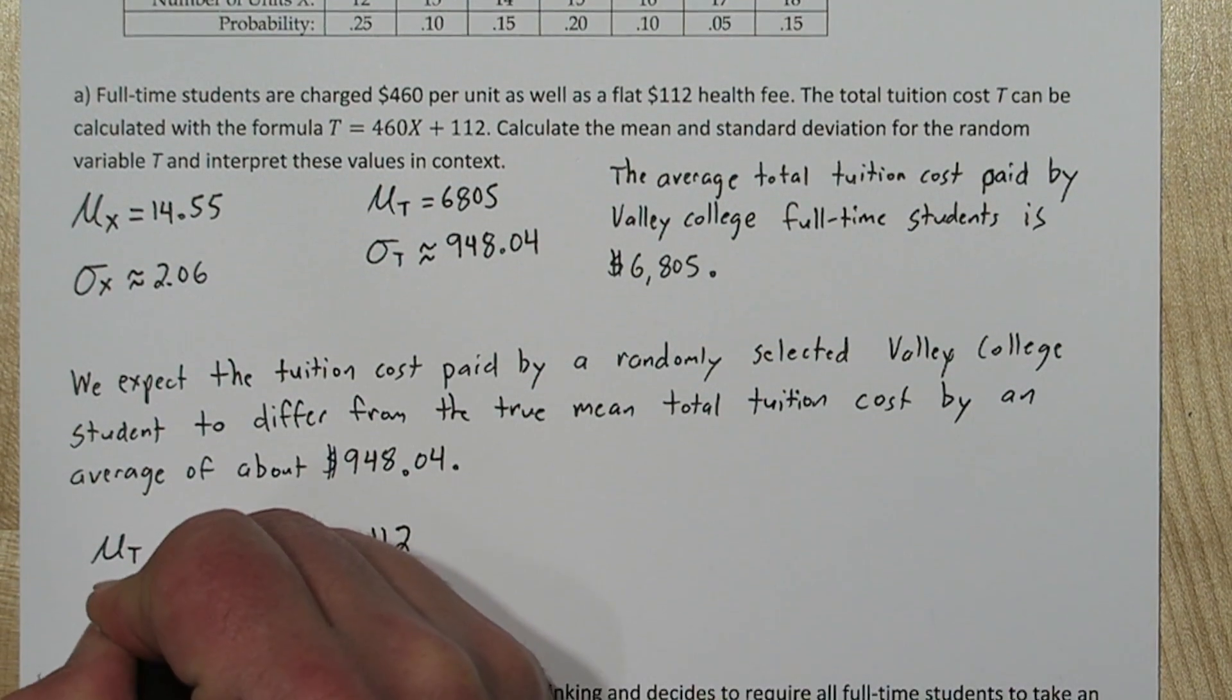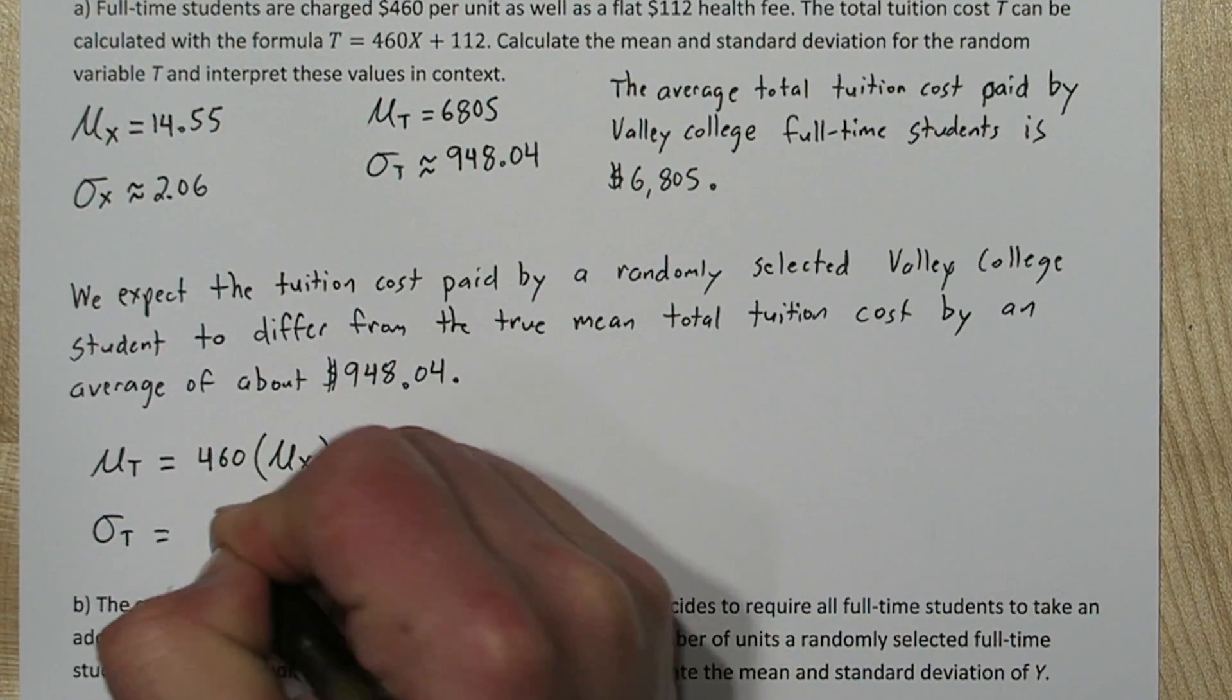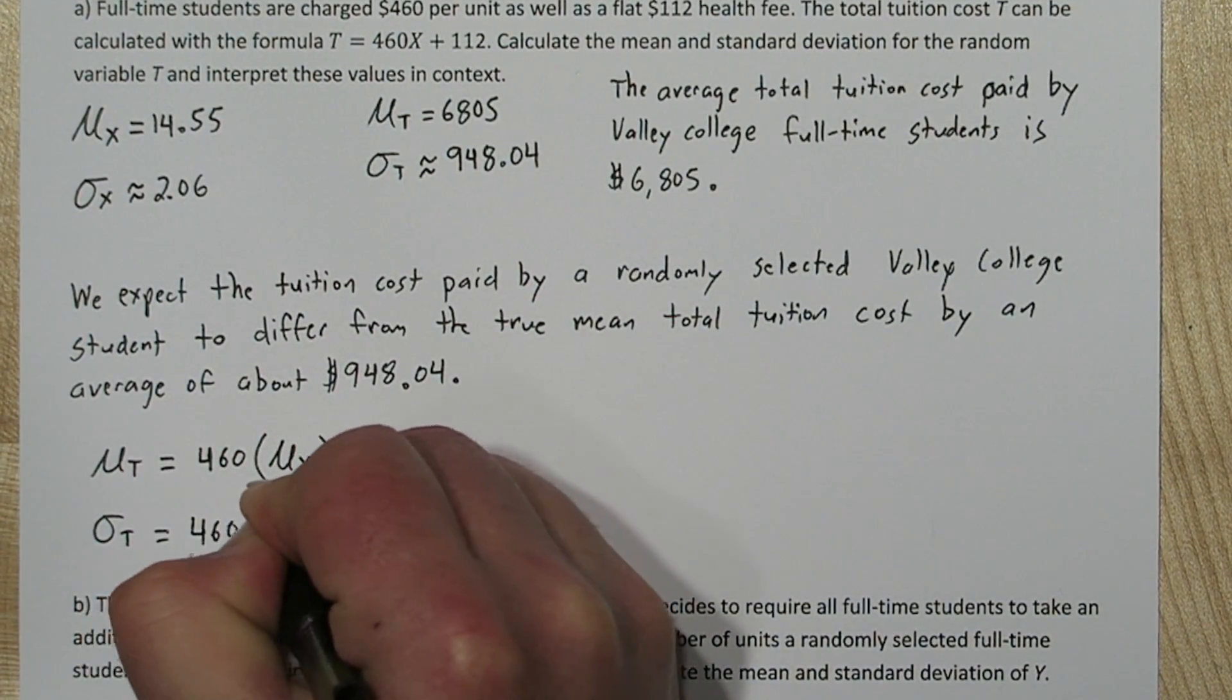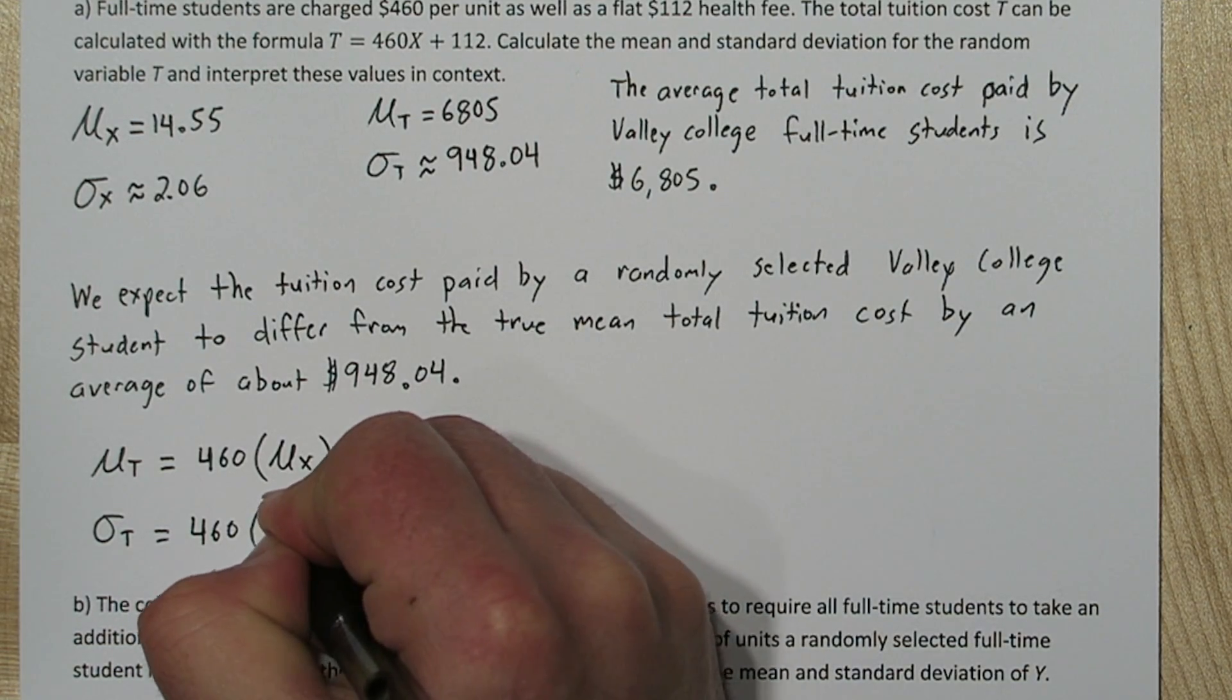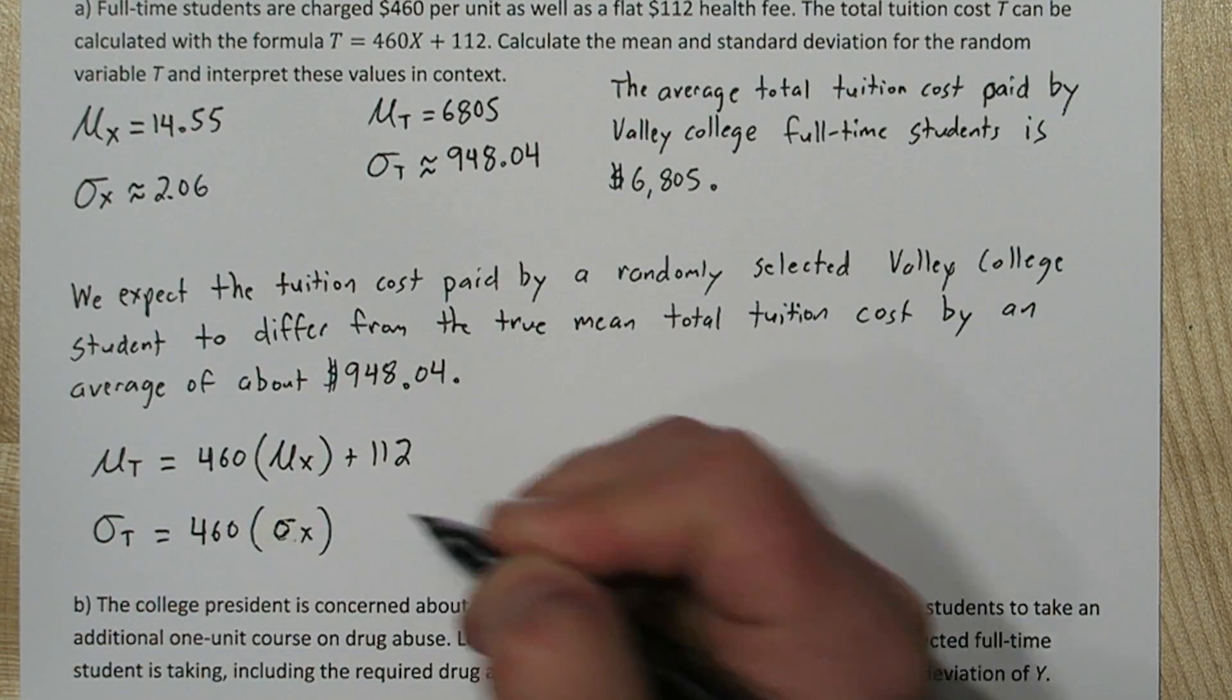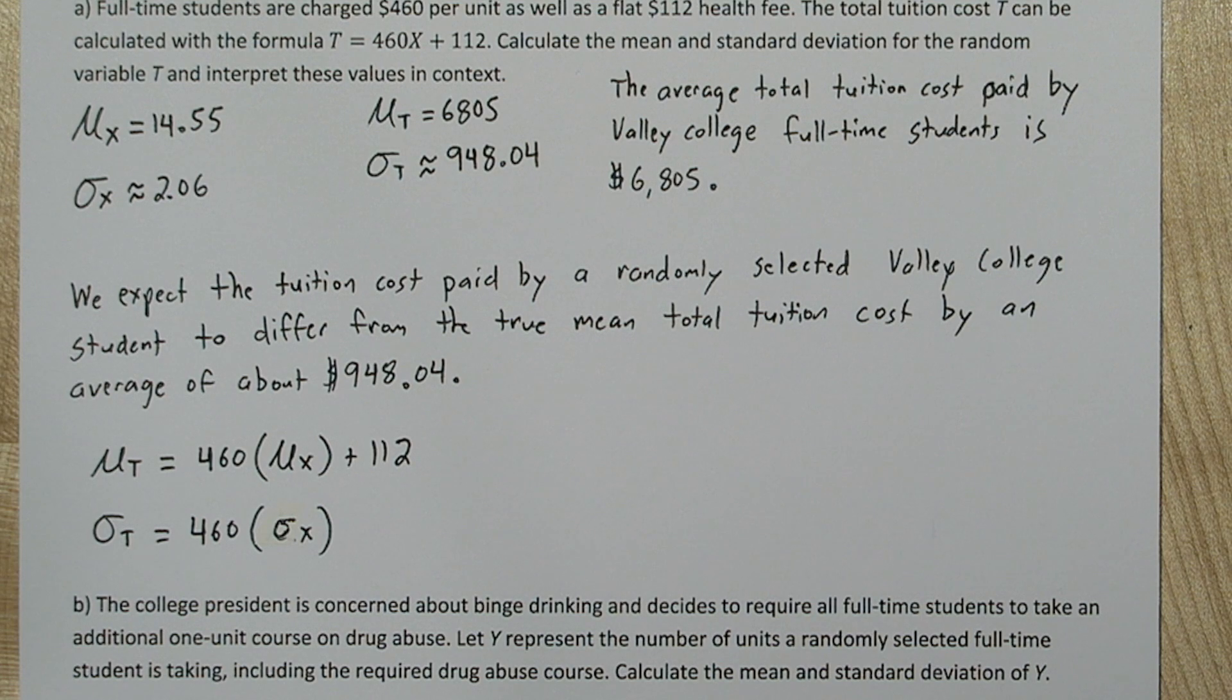The standard deviation is different. To get our new standard deviation, we only multiply the old standard deviation by 460. Measures of spread are not affected by addition or subtraction of constants, but they are affected by multiplication. Measures of center like the mean are affected by both multiplication and addition.